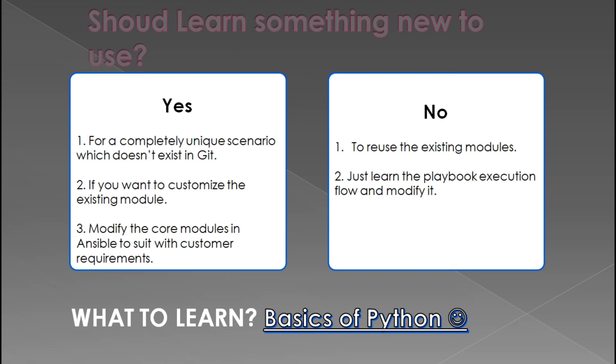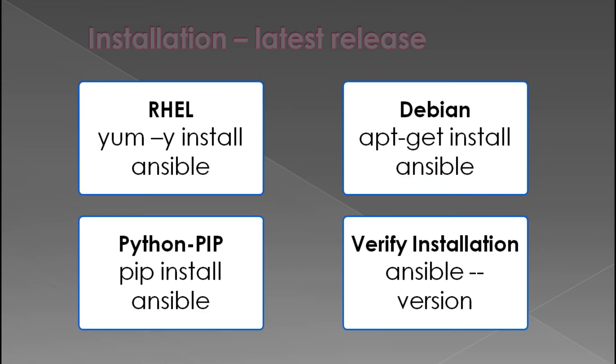What do you need to learn? Just the basics of Python. For installation, there are different ways: if you have an RPM-based machine you can install via the yum package manager; if you have a Debian-based machine you can install via apt. You can also install through pip. Once installed using any of these methods, you can verify by running 'ansible --version'.